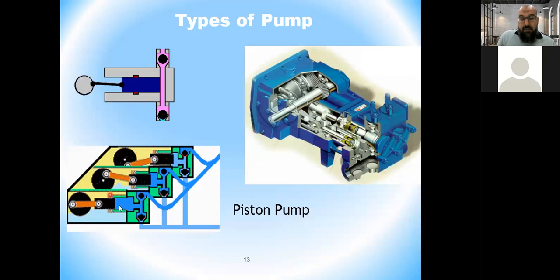The piston pump differs from the plunger pump because the piston works with a crankshaft inside a cylinder. We can have multiple pistons and cylinders — for example, three piston-cylinder units in one pump.